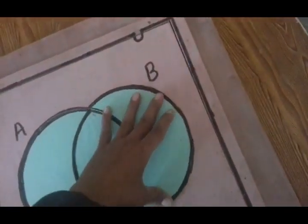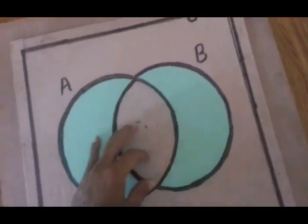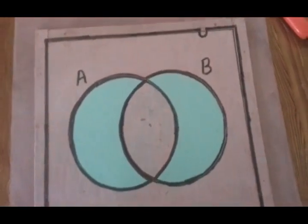This is A union B. We know that this is just symmetry form.